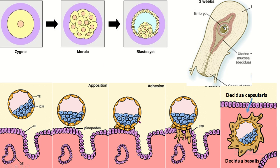In this picture, the lower part shows the blastocyst starting to erode the endometrium and enter within it. The superficial part of the endometrium is known as the decidua capsularis, and the basal portion of the endometrium is known as the decidua basalis. Decidua means pregnant endometrium.